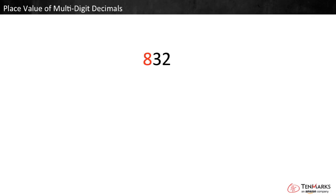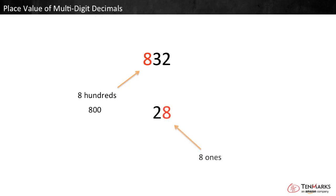For example, we know that the 8 in 832 is worth eight hundreds, or eight hundred. That's different from the 8 in 28, which is worth eight ones, or simply eight.